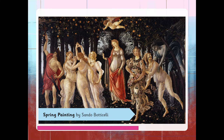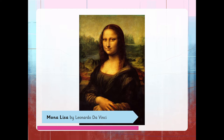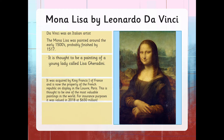I'm sure you all know who this is. It's the Mona Lisa by Leonardo da Vinci. The Mona Lisa was painted around the early 1500s and probably finished by about 1517. It is thought to be a painting of a young lady called Lisa Gerardini. It was acquired by King Francis I of France and is now the property of the French Republic and on display in the Louvre, Paris. This is thought to be one of the most valuable paintings in the world. For insurance purposes it was valued in 2018 at 650 million dollars.